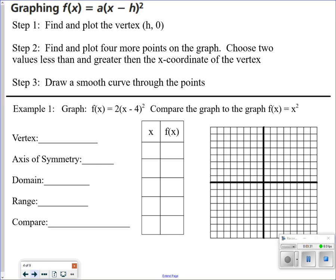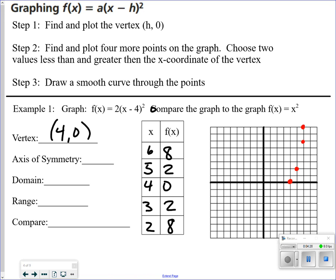Find the vertex, then plot 4 points — choose values greater than and less than the vertex x value — and draw a curve through the points. Vertex is at positive 4 for x, 0 for y, since nothing is added or subtracted. Put that in the middle of the xy chart. Plug in 5, get 2. Plug in 6, get 8. Plug in 3: negative 1 squared is positive 1 times 2 equals 2. And 2 minus 4 is negative 2, squared is positive 4 times 2 equals 8. So points are (4,0), (5,2), (6,8), (3,2), (2,8).